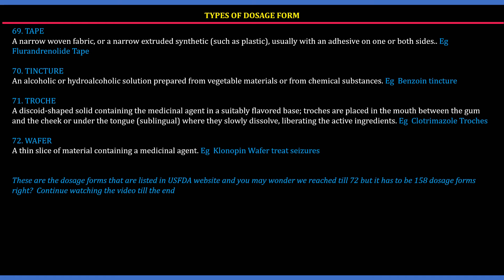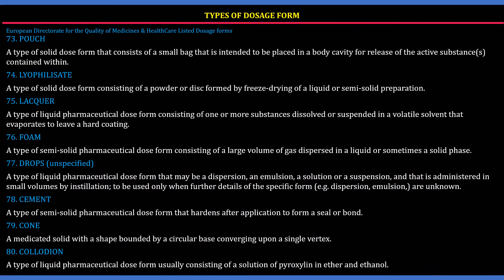72. Wafer: A thin slice of material containing the medicinal agent. Example: clonazepam wafer, used to treat seizures. These are the dosage forms listed on the US FDA website. You may wonder we reached 72, but the total is 158 dosage forms. Now let us see some European Directory for the Quality of Medicines and Healthcare (EDQM) listed dosage forms.